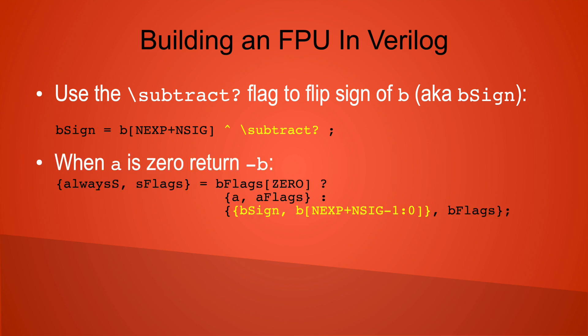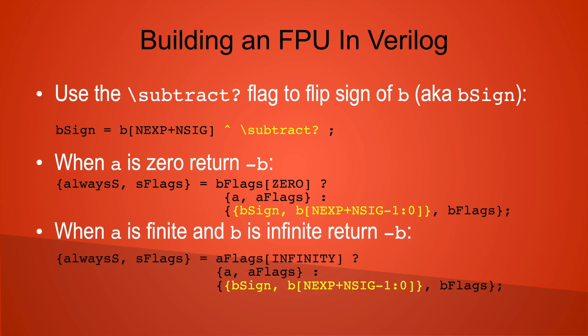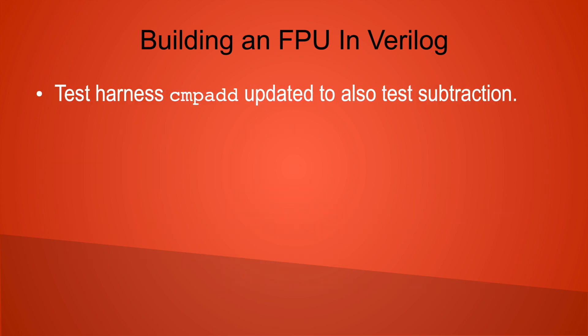When the first operand passed into the module, called A, is zero and B is non-zero, we use B as the return value, but we make sure that the sign of B has been flipped when necessary. Likewise, when A is finite and B is infinite, we construct the return value from B with its corrected sign bit. I updated the CMP add FPGA test harness so it now also tests subtraction.